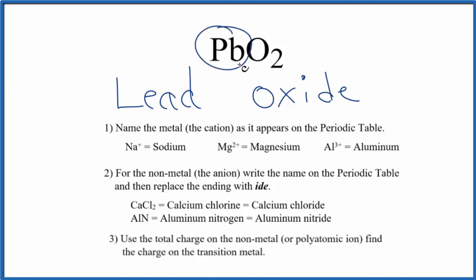But remember we said lead, that's a transition metal. So we need to figure out the charge on the Pb based on what it's bonded to. Here it's bonded to two oxygen atoms. Oxygen always has a two minus ionic charge, so each oxygen here has an ionic charge of two minus.